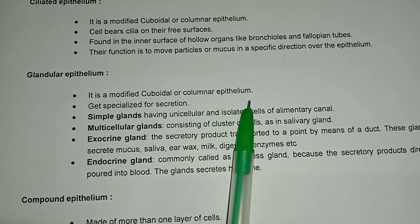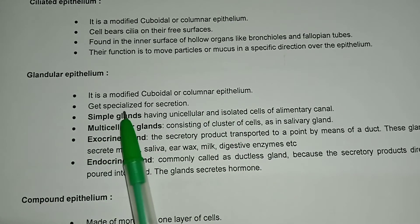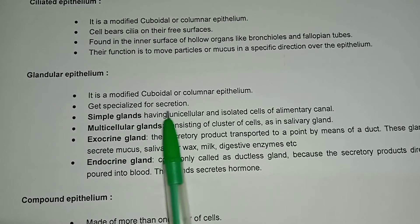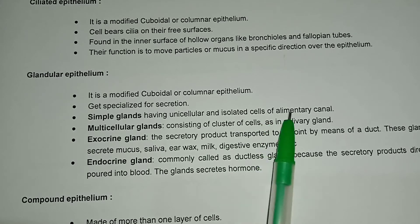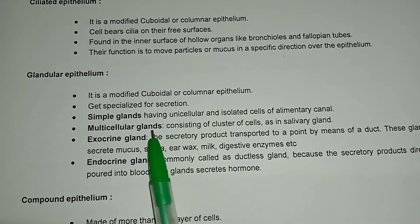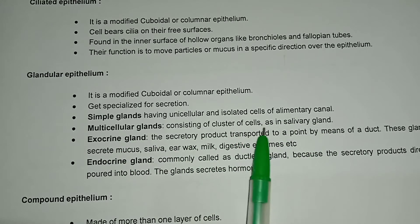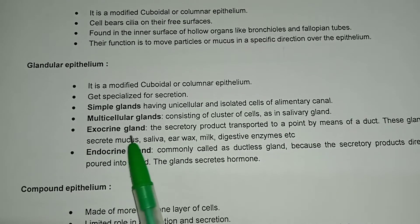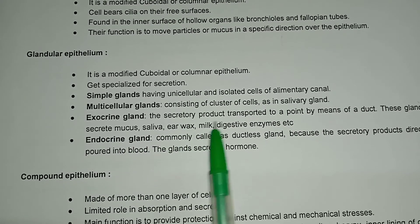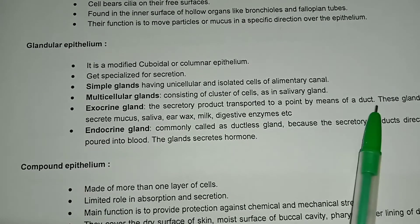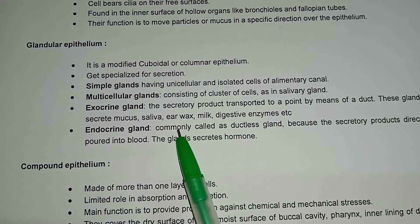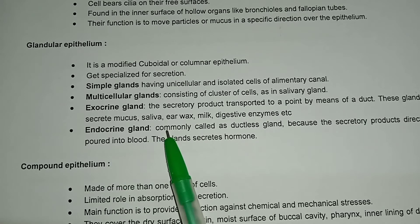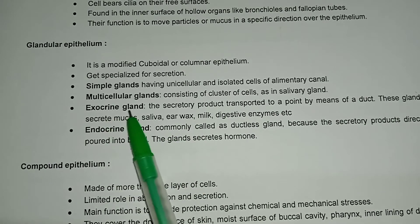The function of ciliated epithelium is to move particles and mucus in a specific direction over the epithelium. Glandular epithelium is modified cuboidal or columnar epithelium specialized for secretion. Simple glands have unicellular and isolated cells of the elementary canal. Multicellular glands consist of a cluster of cells, as in the salivary gland. Exocrine glands transport their secretory product to a point via ducts.